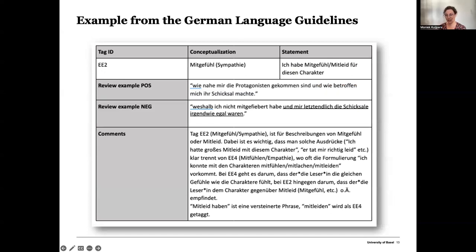I want to point out a nice example of a translation issue we ran into. The item EE2 refers to sympathy, which in German is translated as Mitgefühl. But the verb Mitfühlen and its many variations — like Mitlachen and Mitleiden — are used in German to describe processes of empathy rather than sympathy. In both languages, readers themselves seem to confuse empathy and sympathy. From this process, we've learned that we probably shouldn't use words like 'empathy' and 'sympathy' in our questionnaire items, but rather go for a description — such as 'I felt bad for this character' in English, loosely translated as 'the fate of this character was close to my heart' in German. Incidentally, we saw a lot of heart metaphors being used in the German reviews.